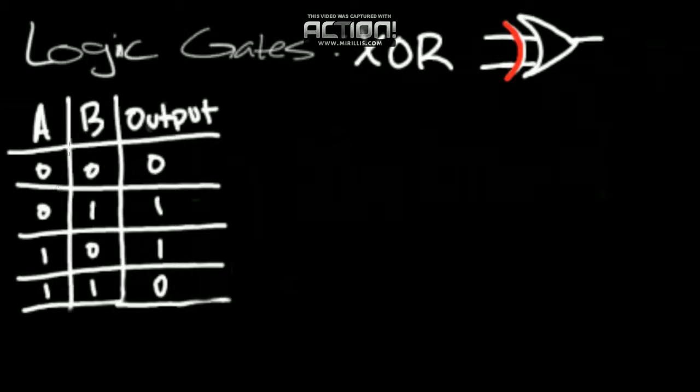So for the first case, we have A and B are both false, and the output is false. Again, like a traditional OR gate. For the second case, we have A is false, B is true. The output is true, just like an OR gate.